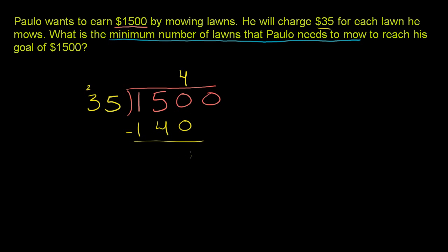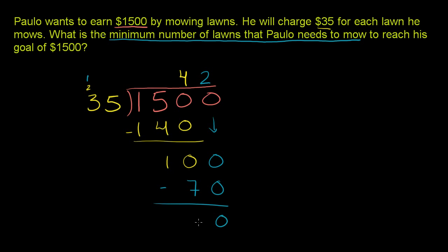Now we subtract. 0 minus 0 is 0. 5 minus 4 is 1. The 1's cancel out. And then we bring down this 0. 35 goes into 100. 35 times 2 is 70, and 35 times 3 is 105, so that's too big — it goes in 2 times. 2 times 5 is 10, carry the 1. 2 times 3 is 6, plus 1 is 7. So 35 times 2 is 70. Subtract: 0 minus 0 is 0. For 0 minus 7, we borrow — this becomes 0, this becomes 10. 10 minus 7 is 3. And there's nothing left to bring down.